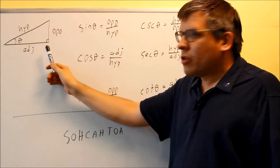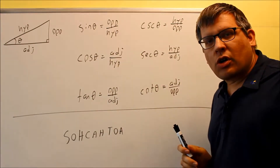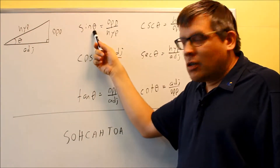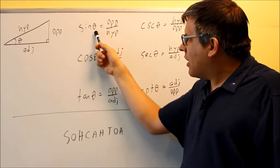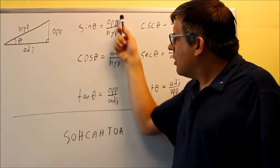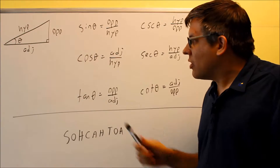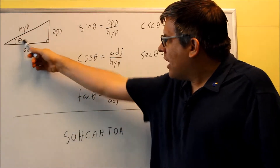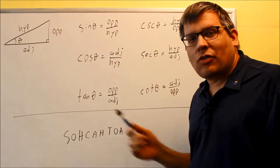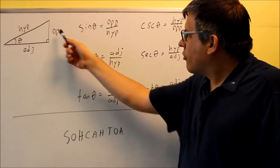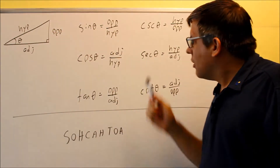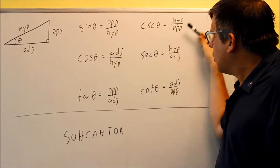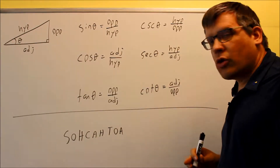With the triangle correctly labeled, we can come up with different definitions. If I have an angle theta, the sine of that angle equals the ratio of the opposite side over the hypotenuse. Whatever that angle is, you should get exactly the same fraction if you put it into a calculator. So opposite over hypotenuse is our definition for sine. Cosecant is the reciprocal of sine, so those two fractions are flipped.